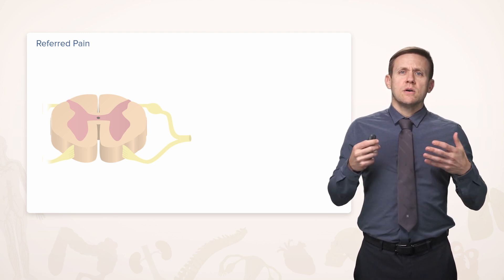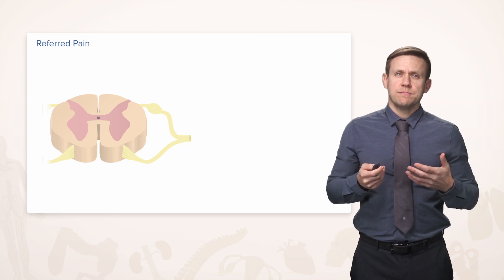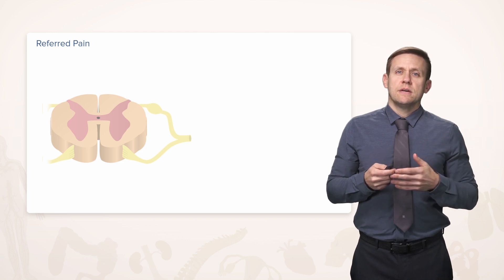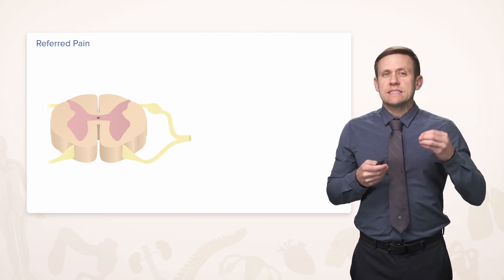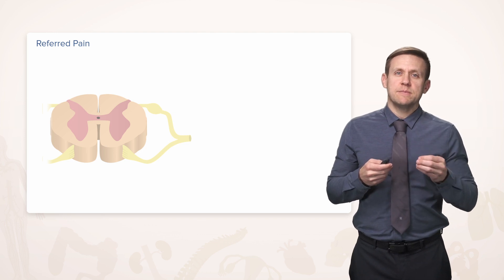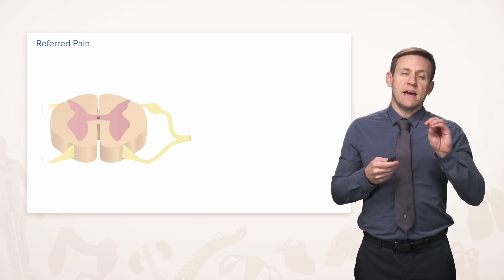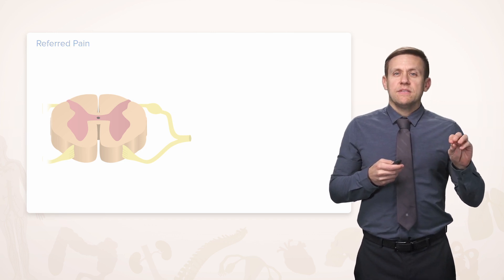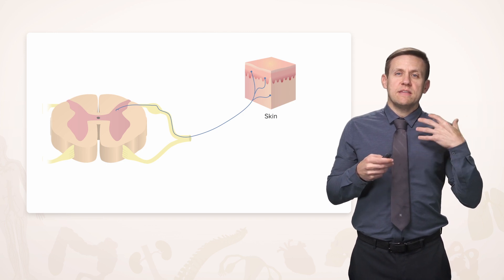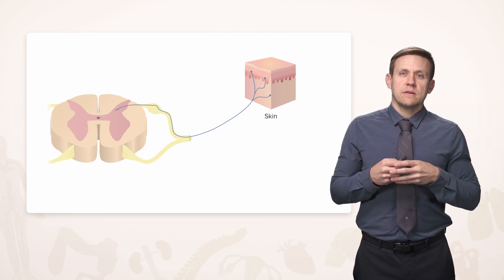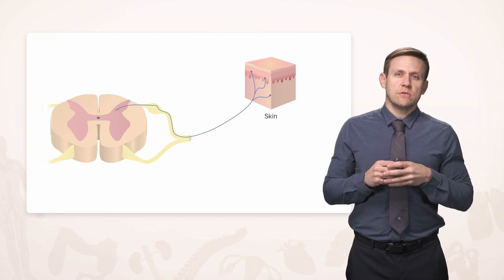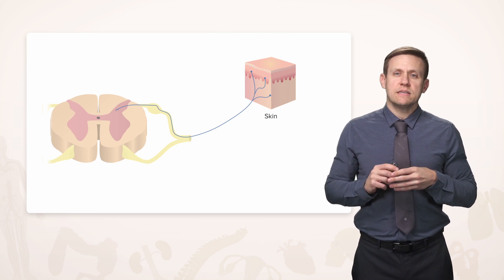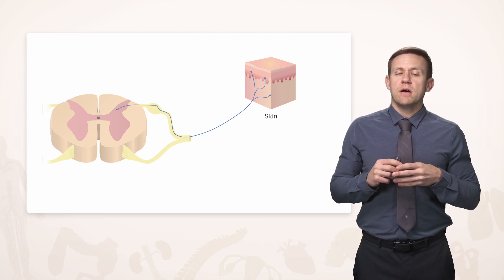So with all of these nerves supplying a dermatome, they're all coming back to a particular spinal level. But there are other things coming back via spinal nerves and other types of nerves to that particular spinal level as well. For example, the skin of, for example, maybe the area of the shoulder might be going back to this portion of the spinal cord. But that level of the spinal cord may also be receiving sensory input from the heart.